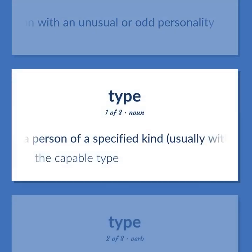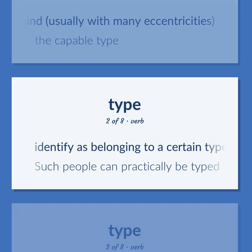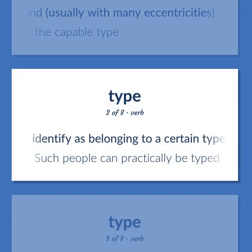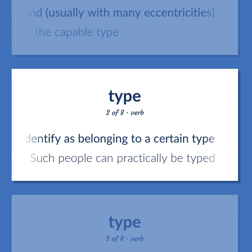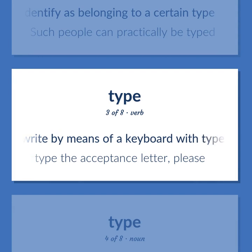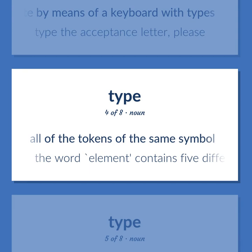TYPE: A person of a specified kind, usually with many eccentricities — the capable type. To identify as belonging to a certain type — such people can practically be typed. To write by means of a keyboard with types — type the acceptance letter, please. All of the tokens of the same symbol — the word 'element' contains five different types of character.